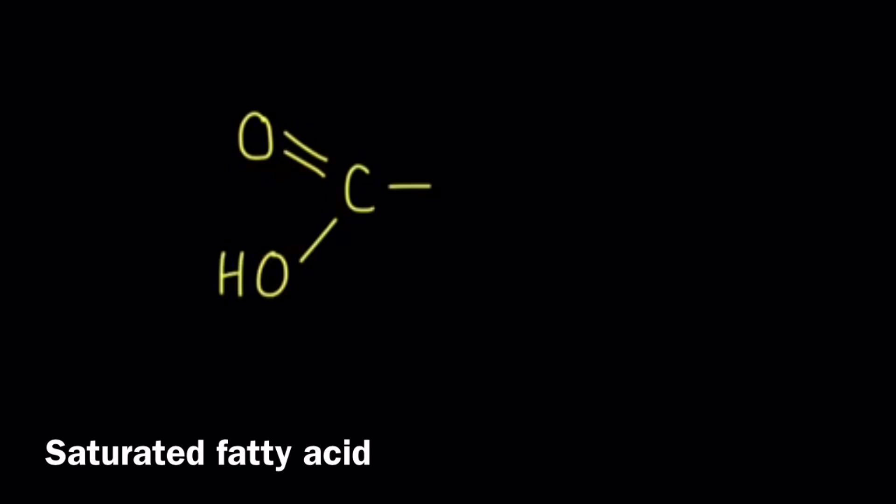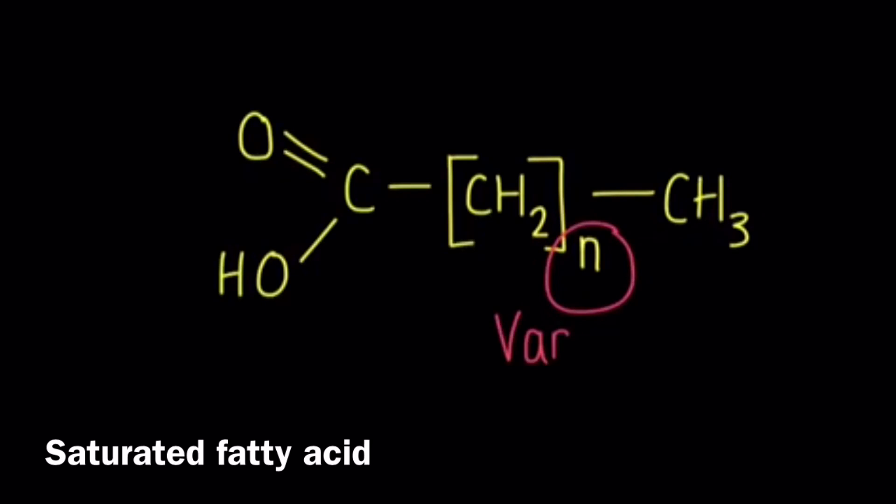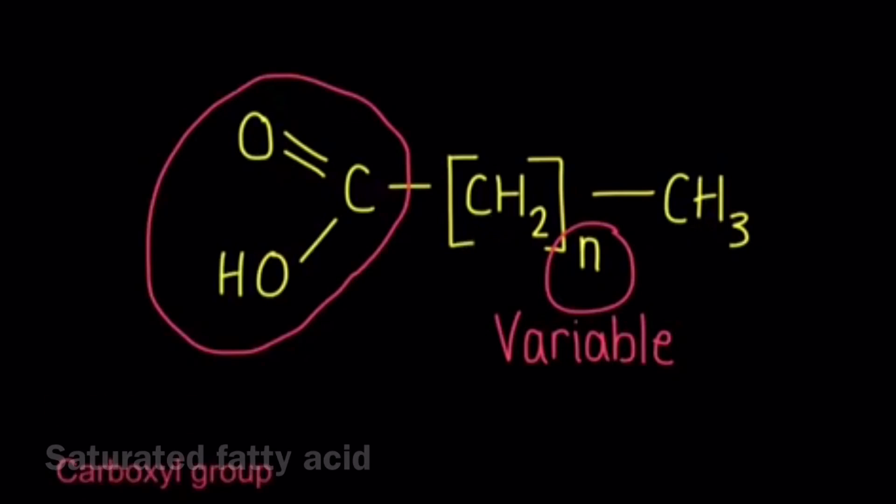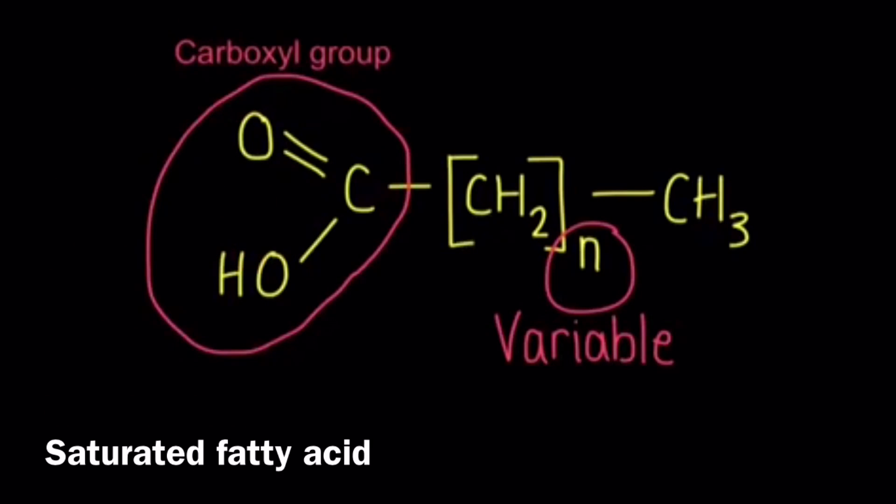Now we have a saturated fatty acid. What I've drawn here is the condensed structure of that saturated fatty acid. The N shows that the CH2 is variable. You could have any number of the CH2s. Then you have the carboxyl group which is on the left hand side, and then the CH2, CH3 portion of the saturated fatty acid is known as the hydrocarbon chain.